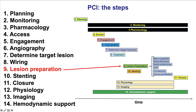Lesion preparation is the 9th of the 14 steps of Percutaneous Coronary Intervention and comes right after wiring through the target coronary lesion. There are various modalities for performing lesion preparation, such as balloon angioplasty, which is the most commonly used, but also atherectomy — both orbital and rotational — laser, thrombectomy, and intravascular lithotripsy.